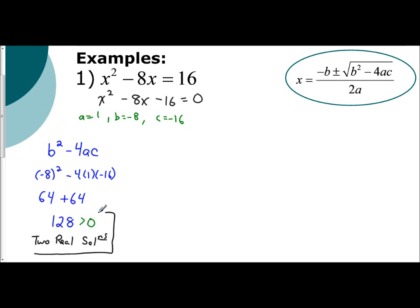And so there's the first part. Find the value of the discriminant. It's 128. Describe what the answers are. It is going to be two real solutions, two real roots.